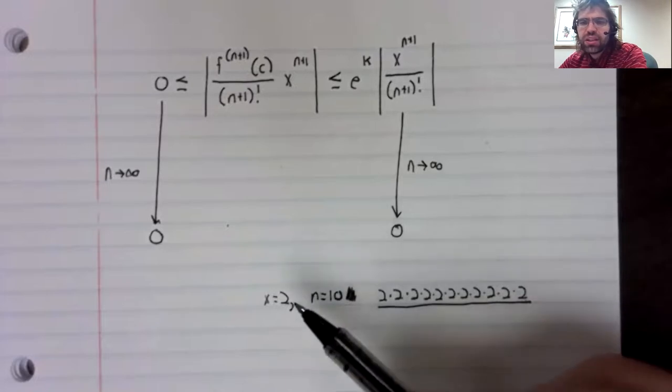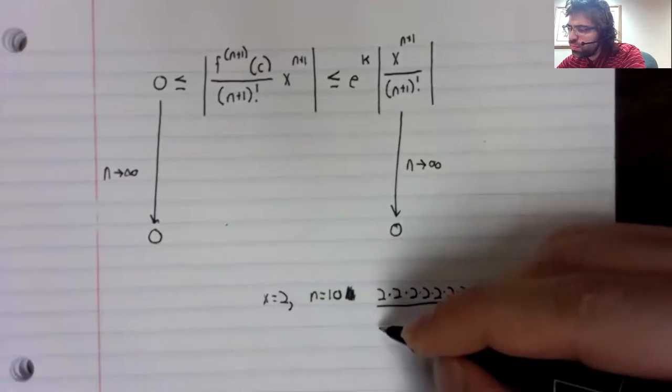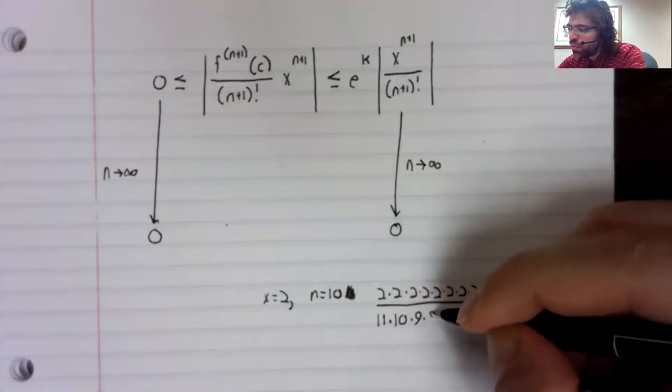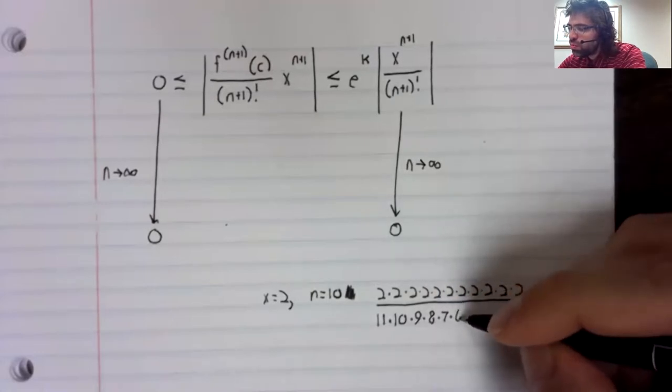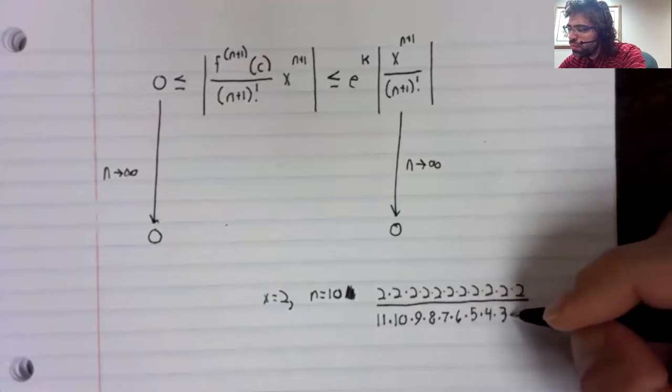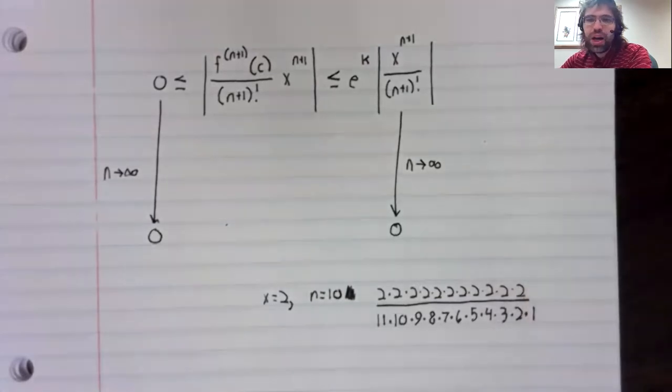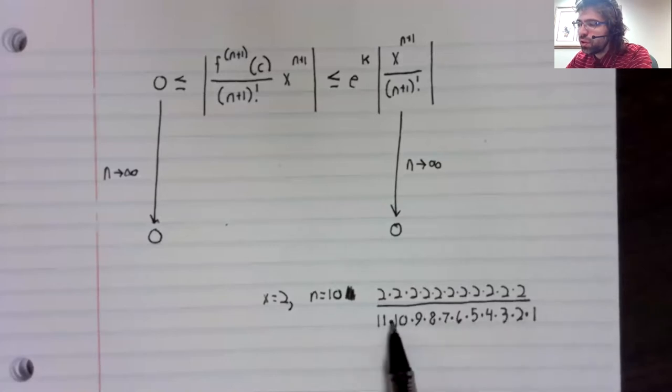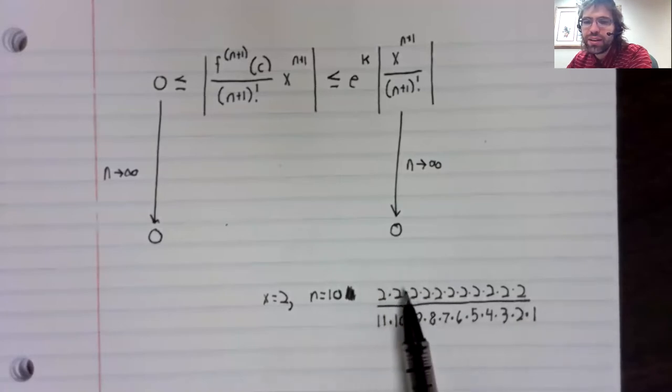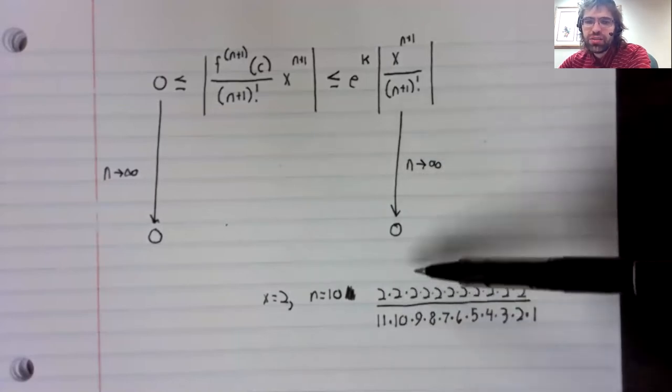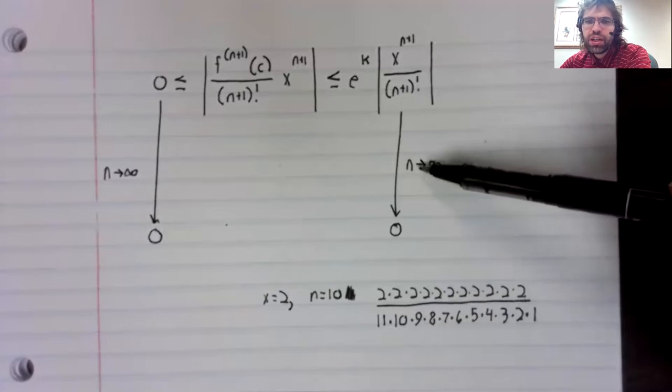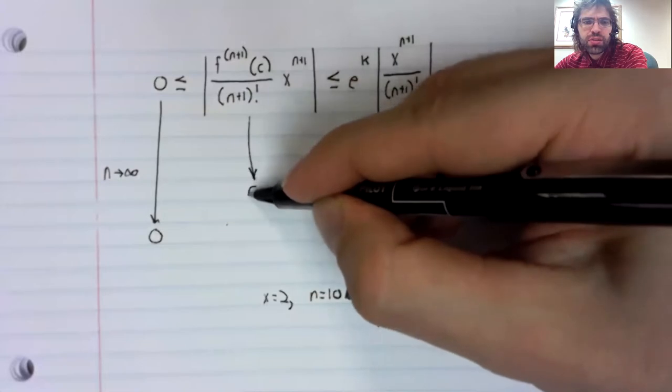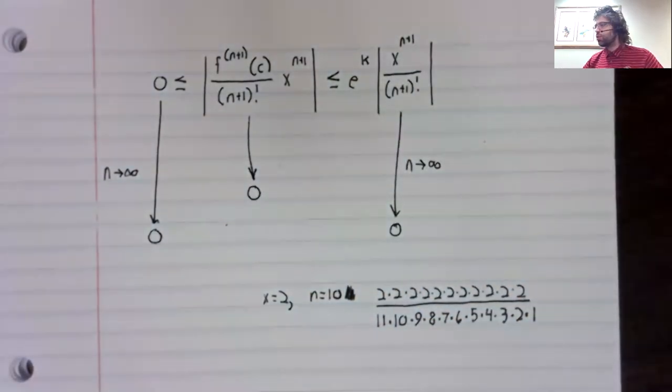And this is a pretty large number, but we have repeated multiplication in the denominator as well. And as long as n is significantly larger than x, the numbers we're multiplying in the denominator will, for the most part, be significantly larger than the numbers we're multiplying in the numerator. This is certainly much larger than this. And because of this pattern, as n goes to infinity, this does go to zero. And the squeeze theorem tells us that this remainder term goes to zero.